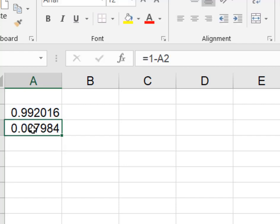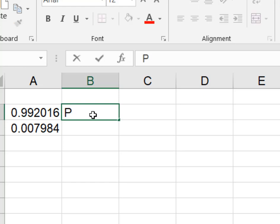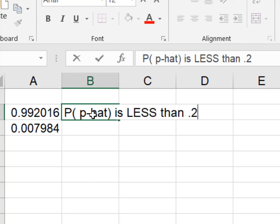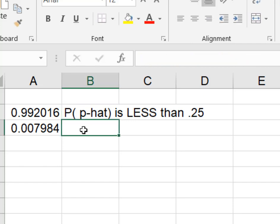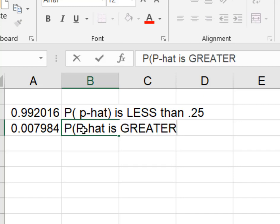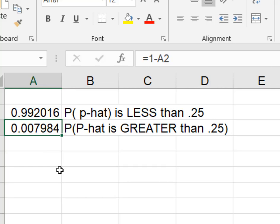So if you looked at this, this is actually the probability that P-hat is less than 0.25. This is the probability that P-hat is greater than 0.25. And you will recall that from our diagram, we wanted the probability that P-hat is greater than 0.25. And so here's your answer right here.